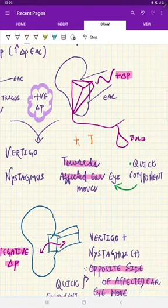So it is looking like T, right? So when you give positive pressure, the quick component of nystagmus is towards the affected ear.